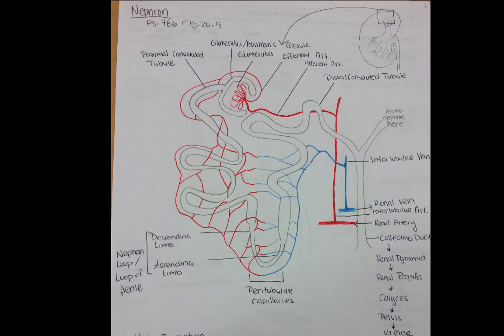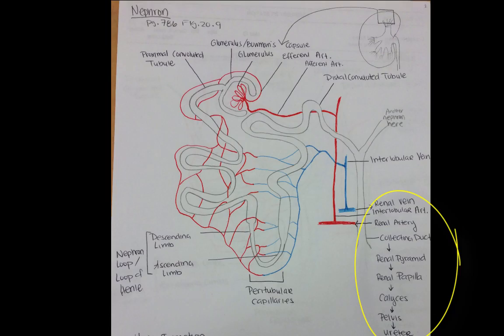The collecting duct drains all the urine into the renal pyramids. The renal pyramids drain to the papillae, the papillae open up to the calyces, the calyces open to the renal pelvis, the renal pelvis drains into the ureter, the ureter empties into the bladder, the bladder drains into the urethra, and the urethra drains to the outside world. We'll stop at ureter for now.